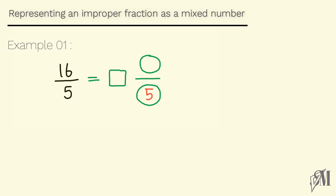To find the whole number and the numerator of the mixed number, divide the numerator of the improper fraction by the denominator — that is 16 divided by 5. We know 16 divided by 5 is 3 and 1 remains. The answer 3 is the whole number and the remainder 1 is the numerator of the mixed number. So our answer is 3 and 1 over 5.